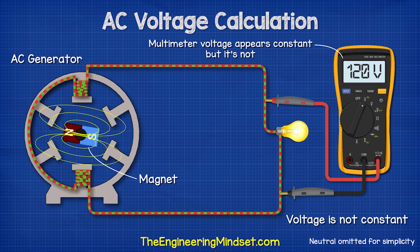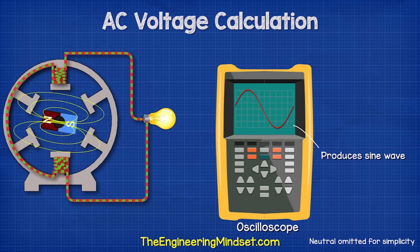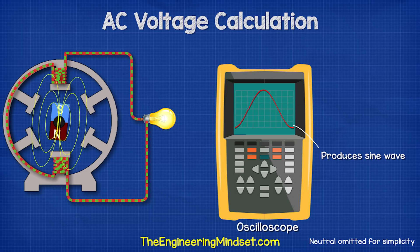The voltage is not constant, even though the multimeter will make it look like it is. If we plotted this, we get a sine wave pattern.